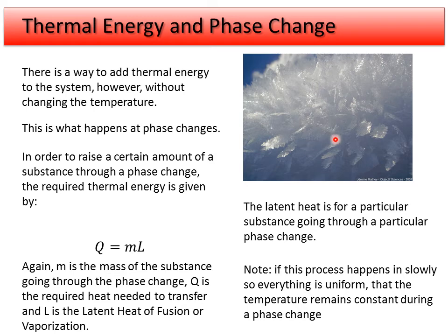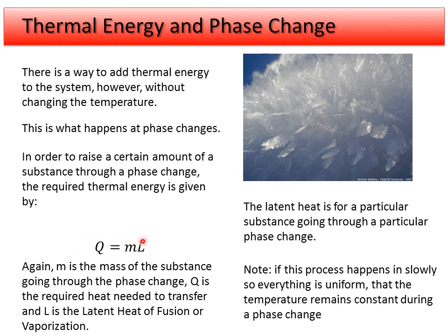Once we have a single phase and that substance starts changing temperature, we use the temperature change equation. Many students get confused about how to use these two equations together. If you start with ice cubes and want to turn it into steam: first, do a temperature change to bring the ice up to its melting point; then use the phase change equation to go from ice to water; then use temperature change to raise the water to its boiling point, 212°F or 100°C; then apply the phase change equation again; and finally, when you have all steam, the steam can rise in temperature.